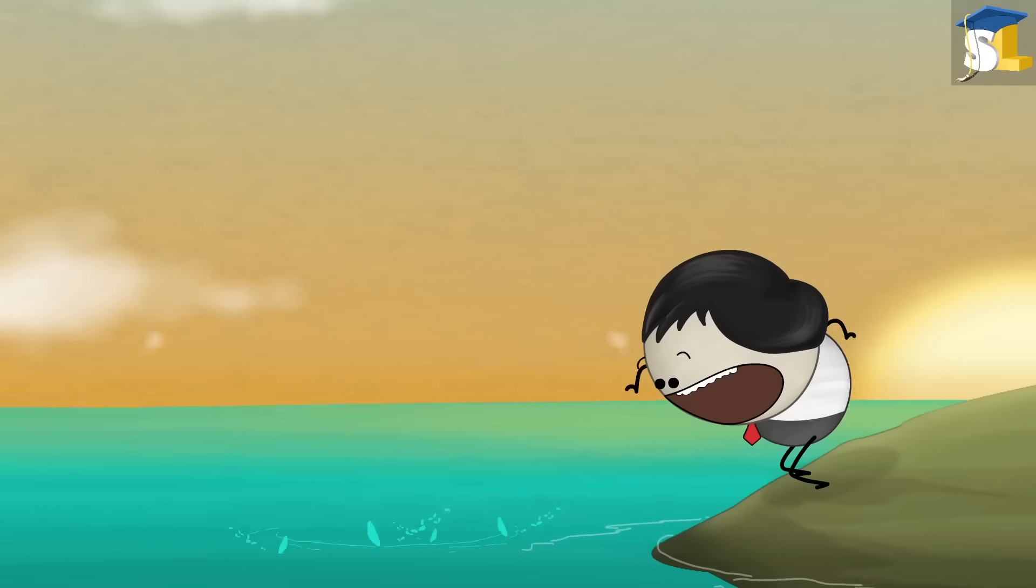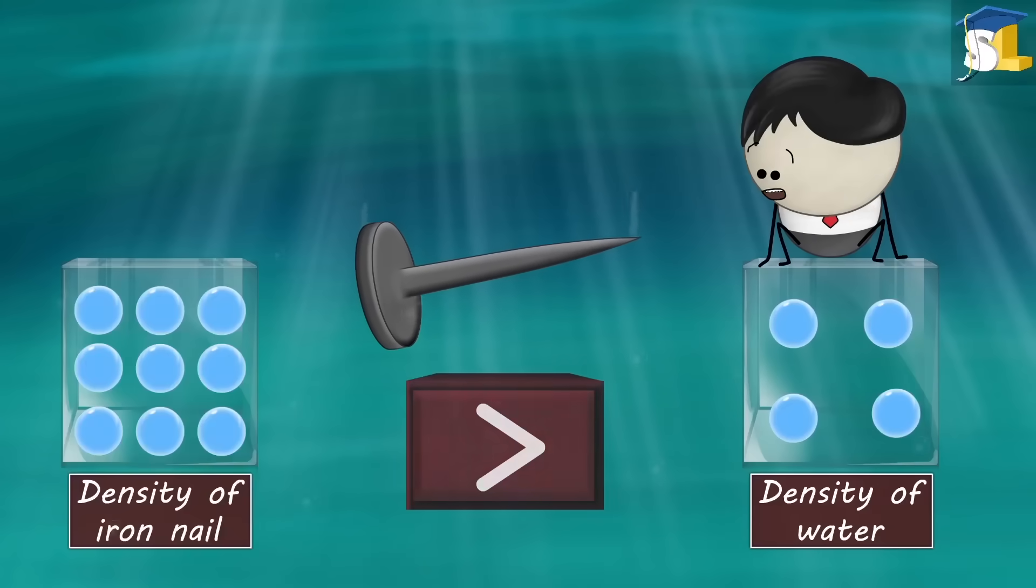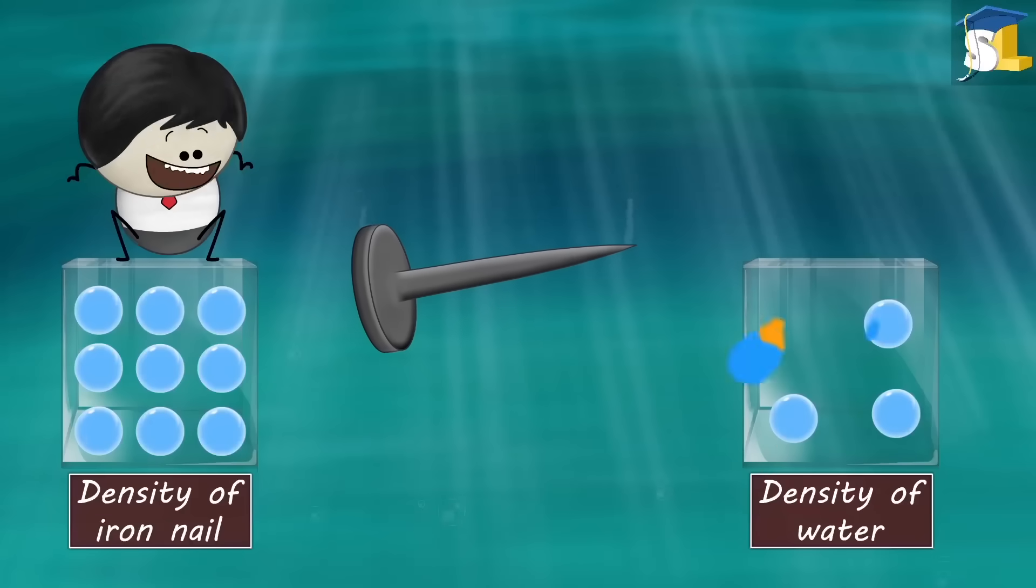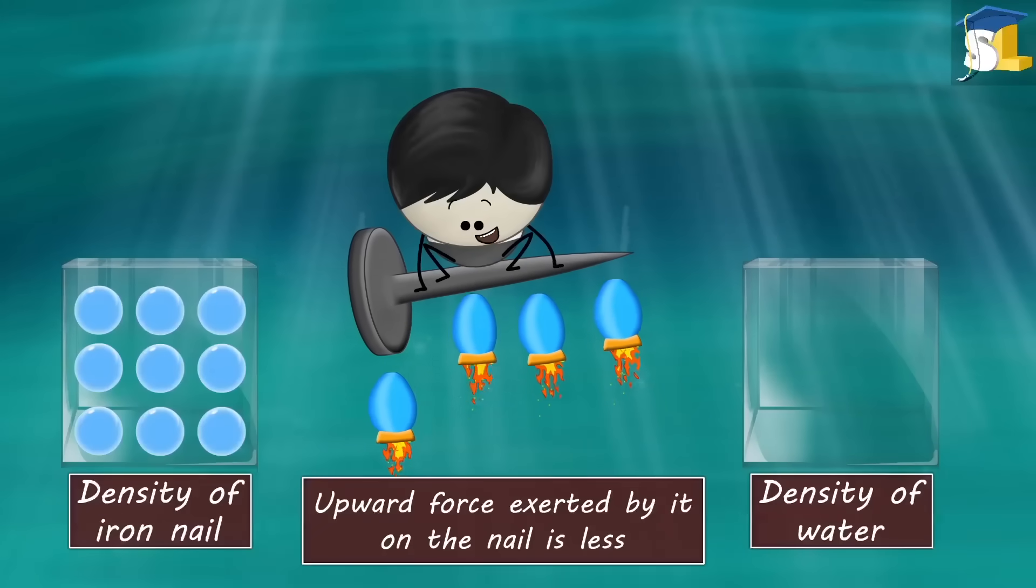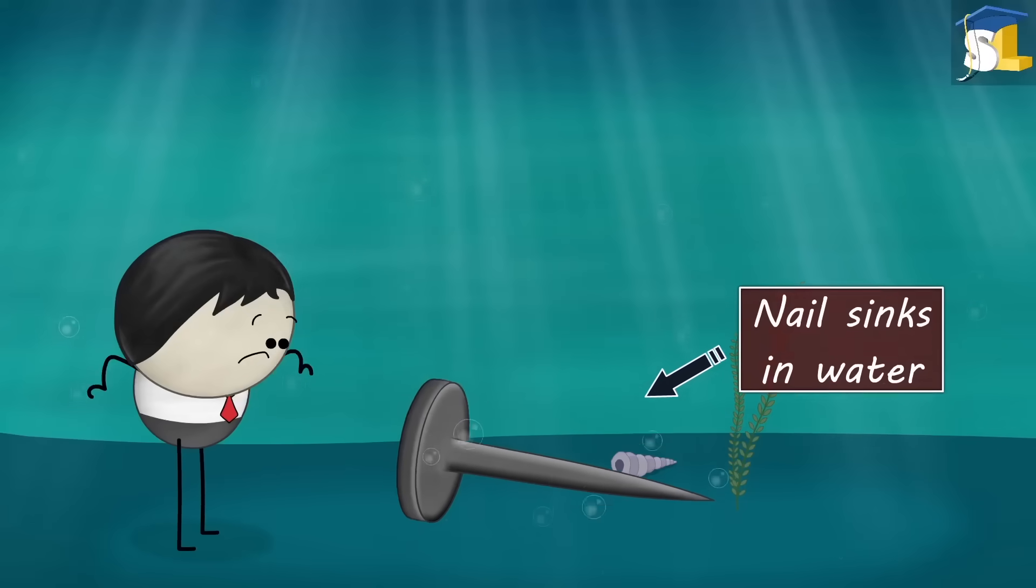In the first case, the iron nail sinks in water because the density of water is comparatively less than the iron nail. As water is less dense, the upward force exerted by it on the nail is less. Hence, the nail sinks in water.